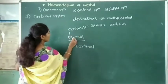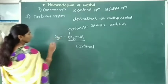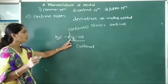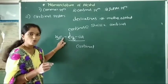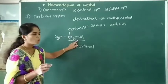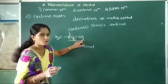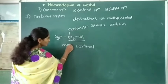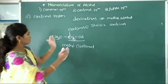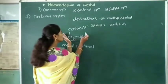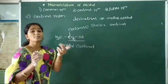Suppose this carbynol carbon is attached to a methyl group. Then the name of this compound — this alcohol — is methyl carbynol. The CH2OH, or methyl alcohol, is called as carbynol.